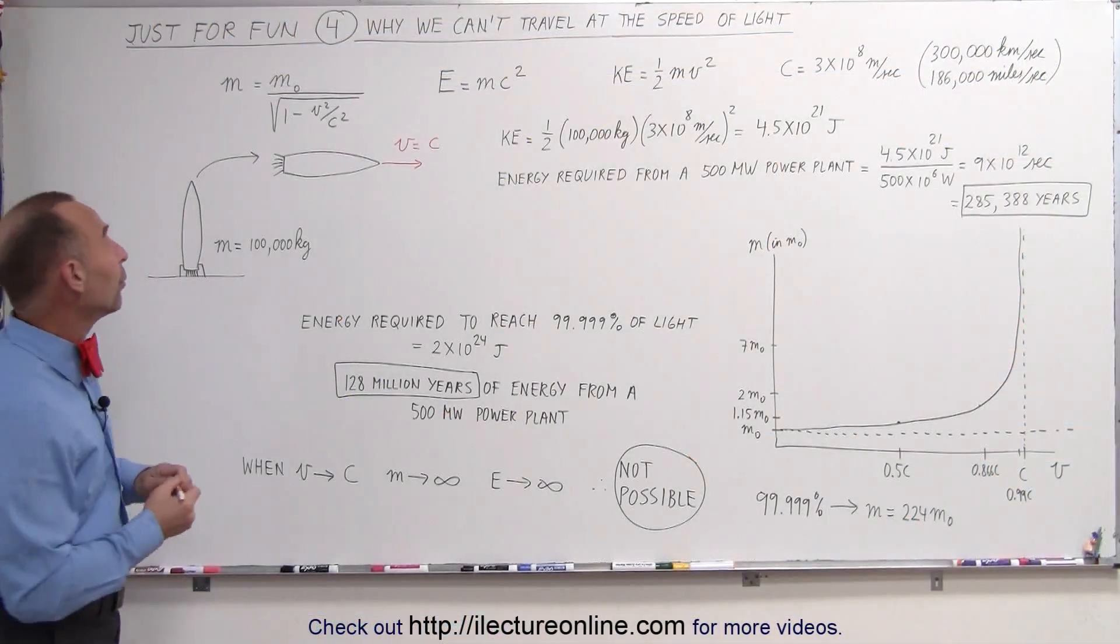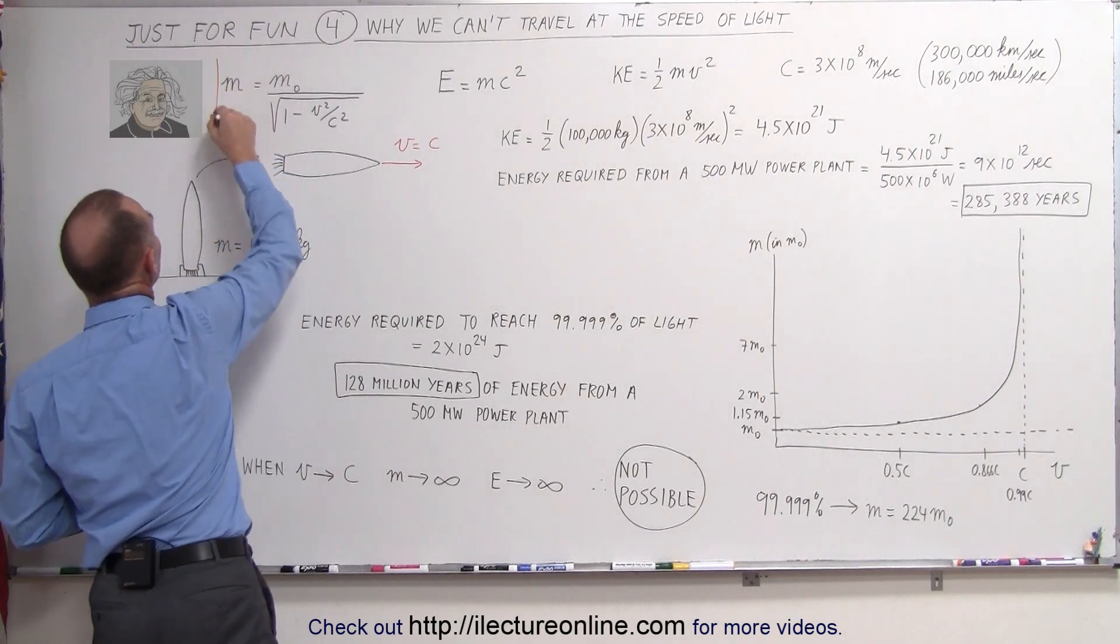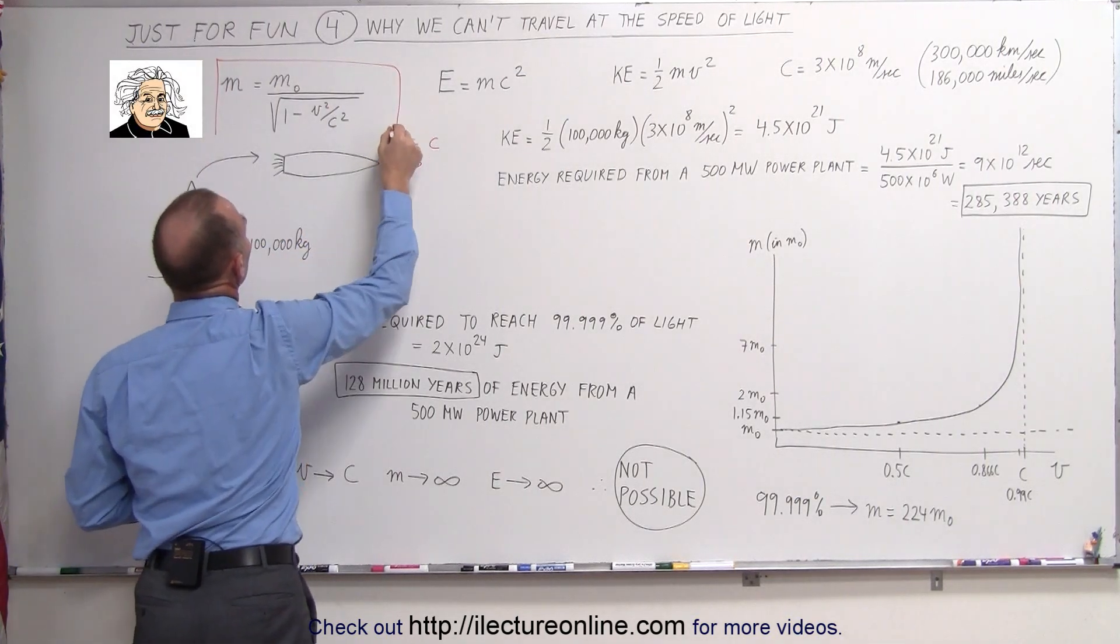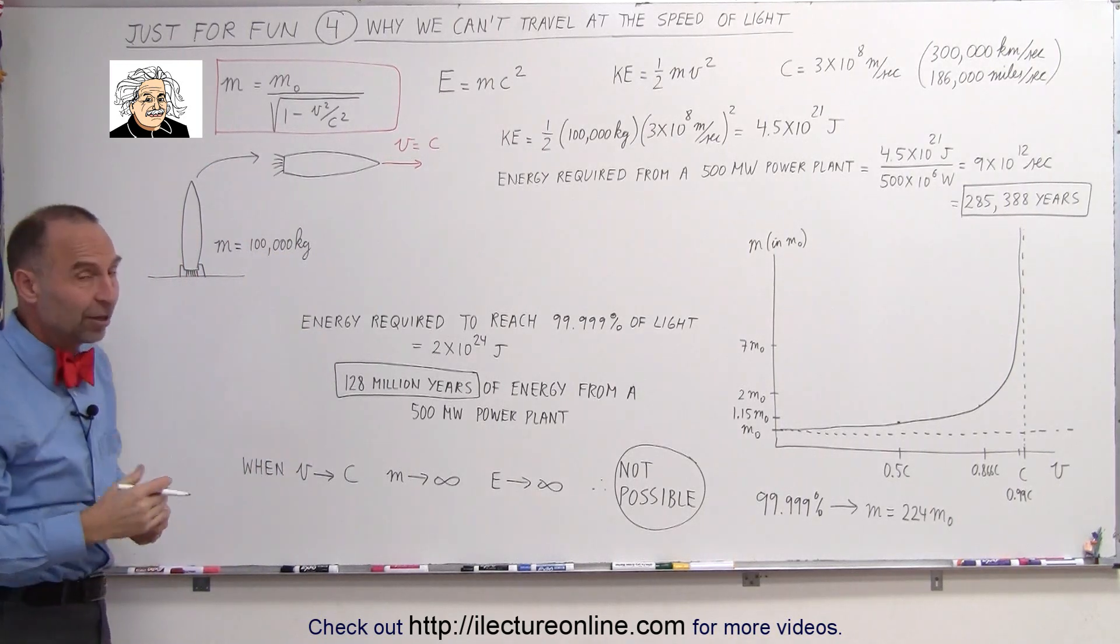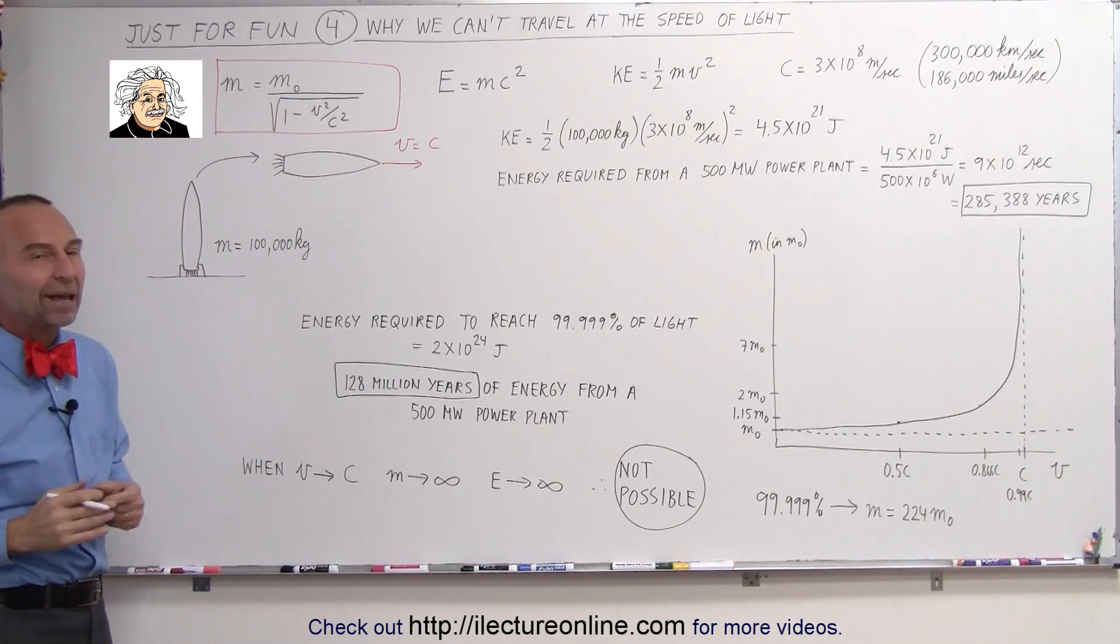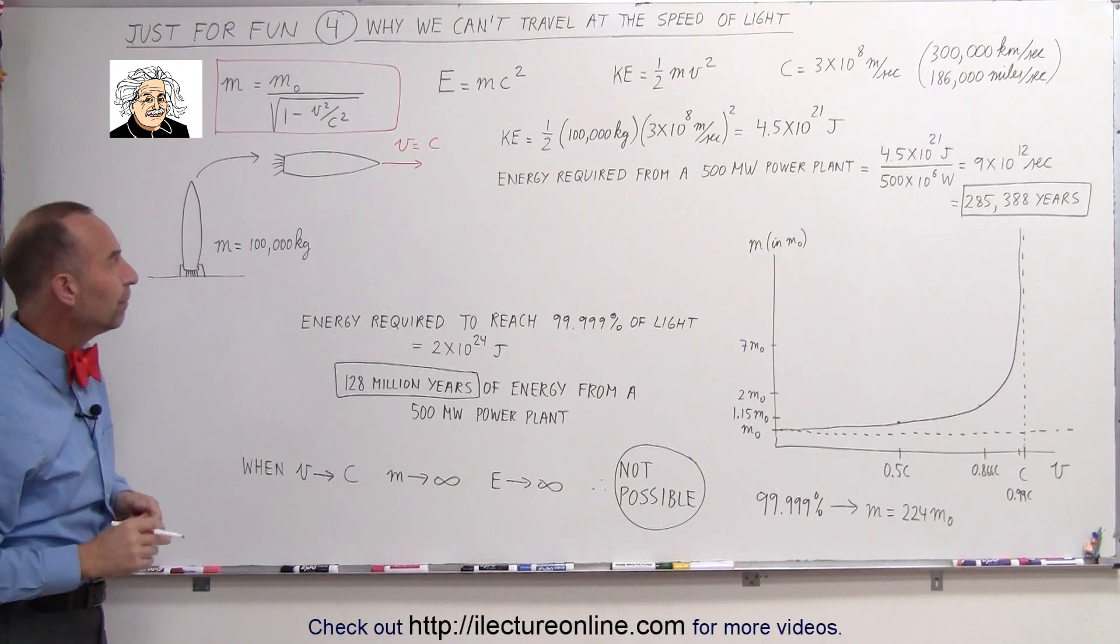There's three equations that are going to play a role. This one here came from Einstein. Einstein realized that something happens to the mass of an object when it begins to travel really fast. The faster it travels, the more mass it gains, and we'll get to that in just a moment.